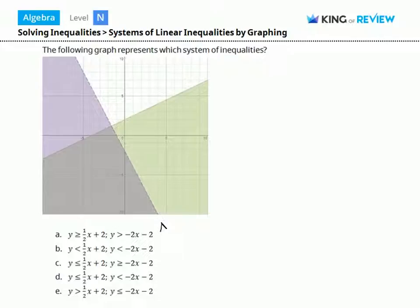Let's start by looking at this line here. We want to put this in the slope-intercept form, which is y equals mx plus b, where m is the slope and b is the y-intercept. Where is the y-intercept on this line?